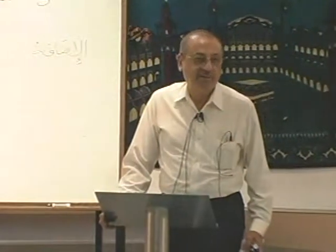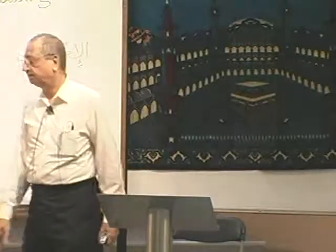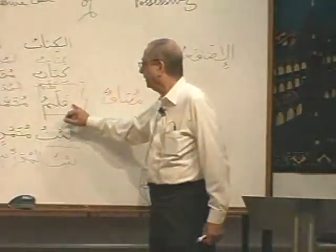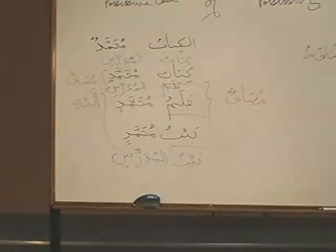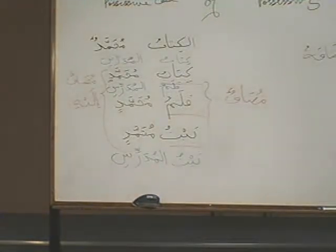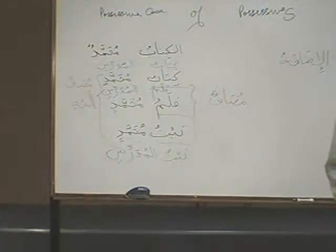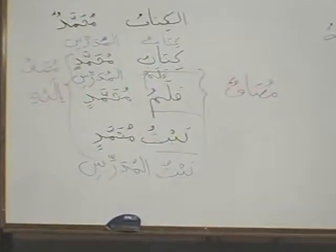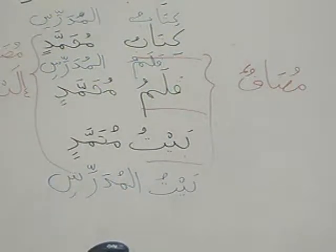Mansub is coming in Book Two. Majroor will come now. If I say 'Pen of Muhammad,' then Kalamu Muhammadin. 'Pen of teacher,' Kalamul Mudarrisi, because it's Al-Mudarrisi. Al-Mudarrisi became Al-Mudarrisi. Kalamul Mudarrisi — Kalamu will join it.